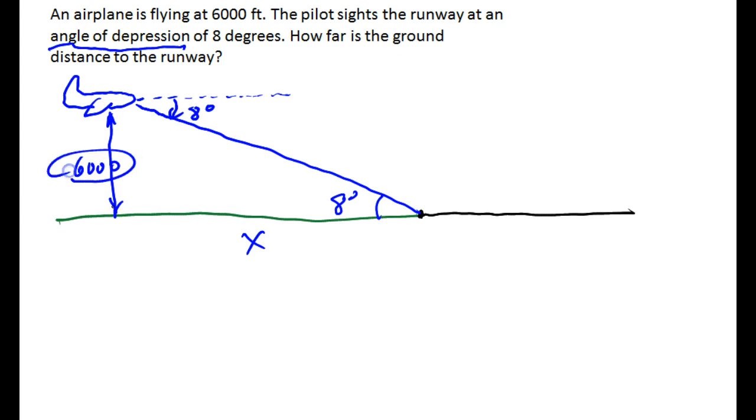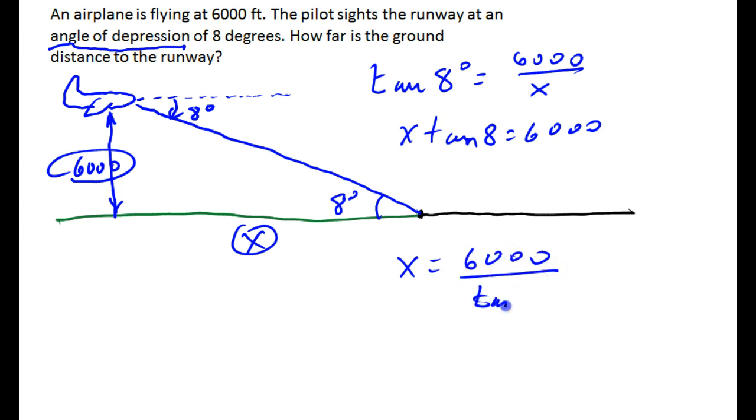So we know the opposite side. We're looking for the adjacent side. We're going to use tangent again. The tangent of 8 degrees is opposite over adjacent. So X tangent of 8 is 6,000. X is 6,000 divided by the tangent of 8 degrees.